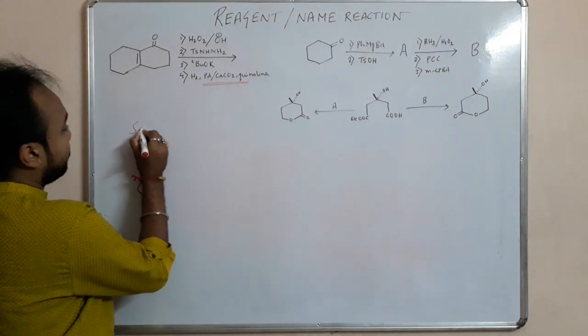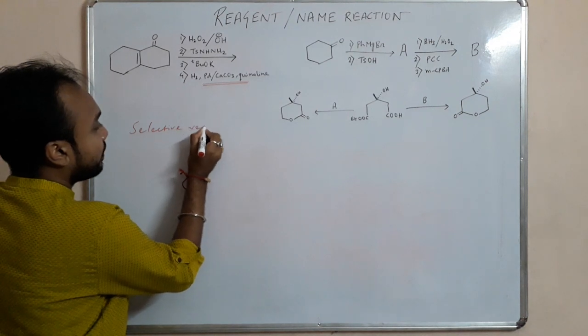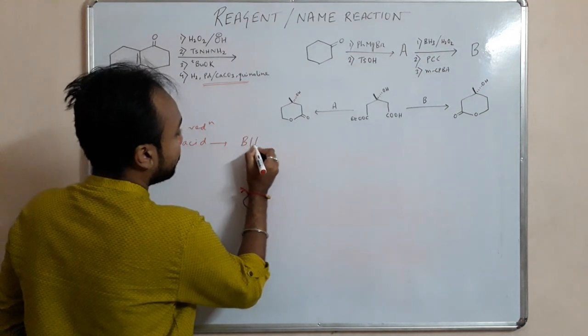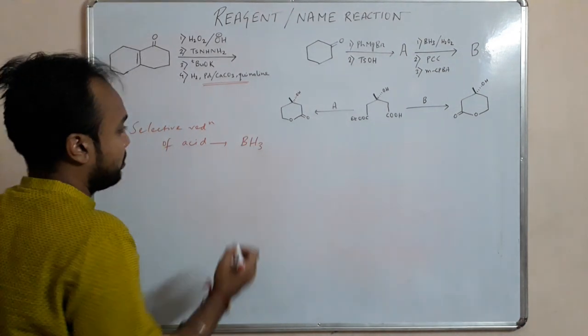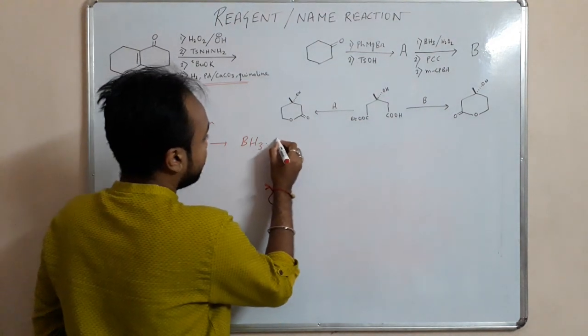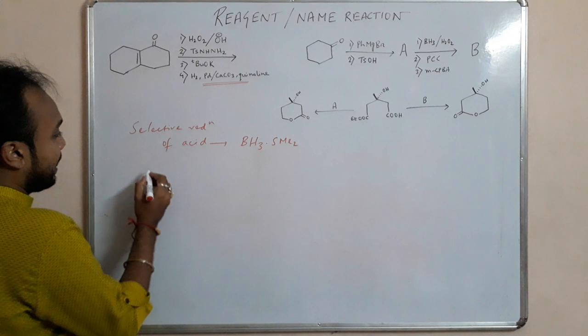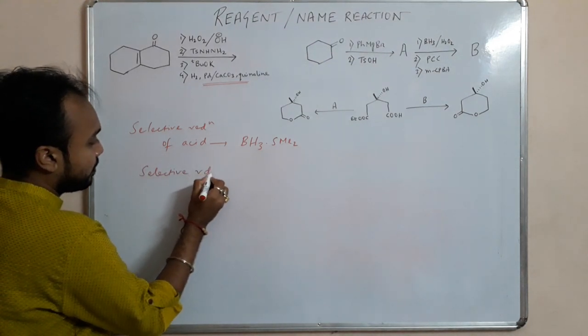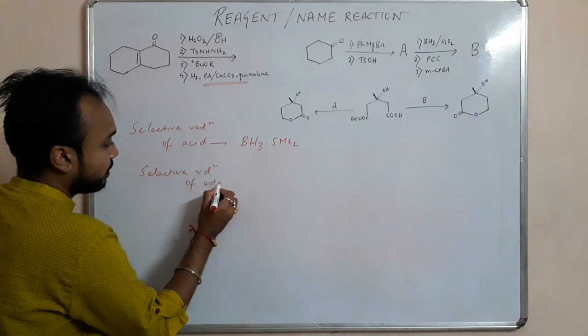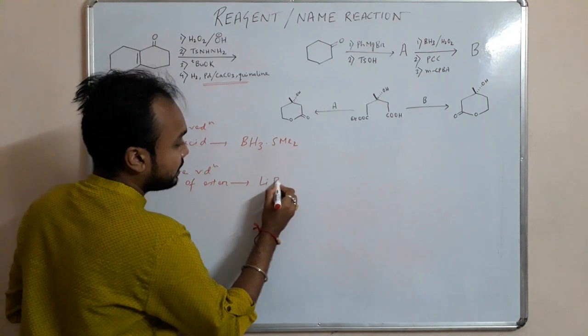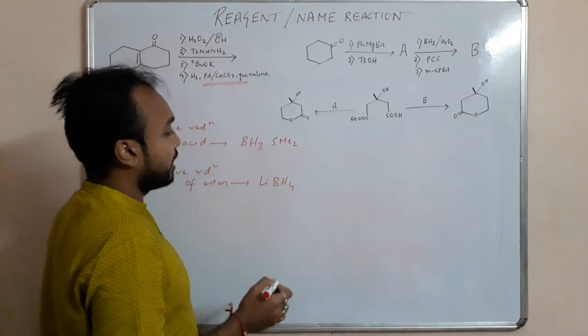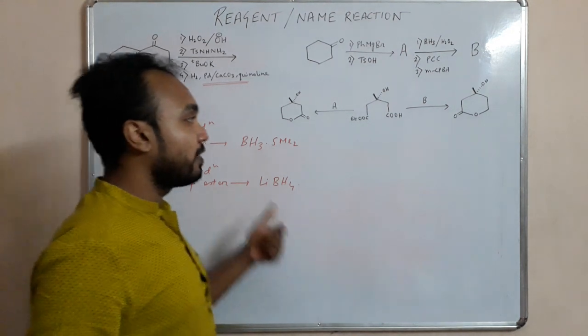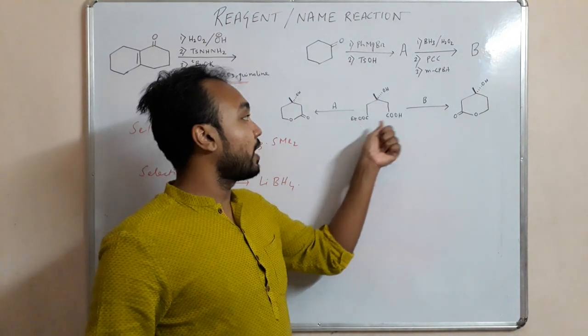For selective reduction of acid, we use diborane B2H6 or BH3. And for selective reduction of ester, we use lithium borohydride, not aluminum hydride. Because lithium aluminum hydride is a very strong reducing agent, which can reduce both the ester as well as the acid.